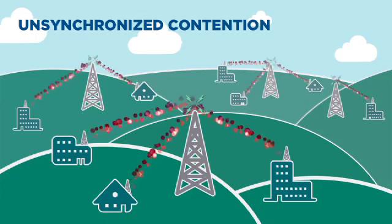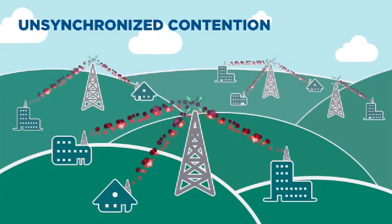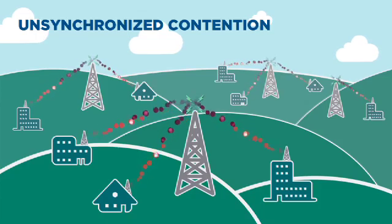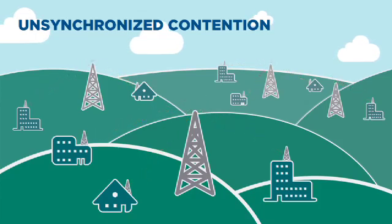The more interference you have, the more range you reduce, the more throughput you reduce, the more towers you put up, which increases the interference level overall in the network.